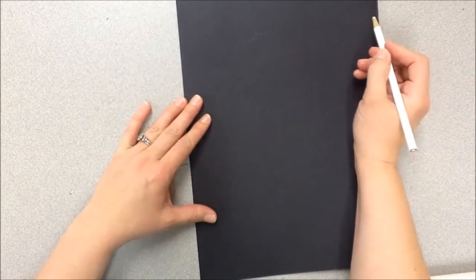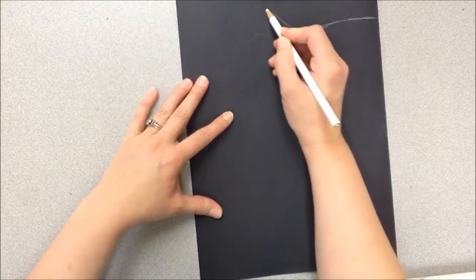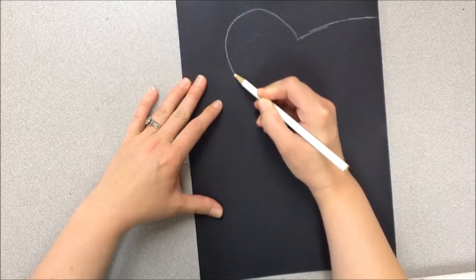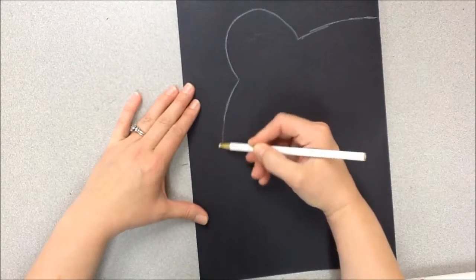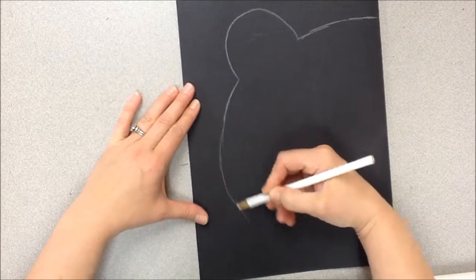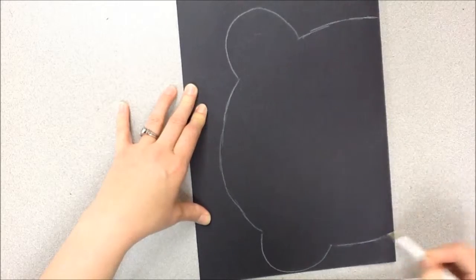So I'm going to take my white colored pencil, I'm going to start doing his shell, and then I'm going to do his feet, and come up here, and go around to his other feet, and his shell up to here.